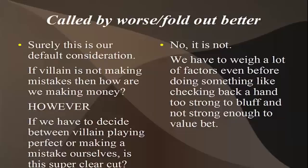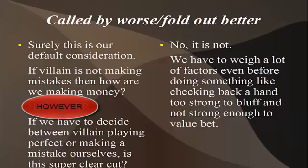If I'm bluffing, am I getting enough folds? If I'm value betting, am I going to have the best hand at least greater than half the time when I'm called? That's the default consideration — the primary — everything else is secondary. If villain is not going to be making a ton of mistakes against our bets, how are we going to be profiting? If our opponent is not making mistakes, we're really not making money. But here's the other side of the coin — and I don't think I've ever heard anybody talk about this — if we have to make a decision between allowing our opponent to make a perfect fold or making a mistake ourselves, is it really as clear cut as it sounds?